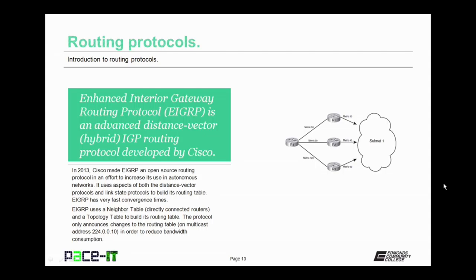As a special mention, Enhanced Interior Gateway Routing Protocol, EIGRP, is an advanced distance vector, or hybrid, IGP routing protocol developed by Cisco. In 2013, Cisco made EIGRP an open-source routing protocol in an effort to increase its use in autonomous networks. It uses aspects of both the distance vector and link state protocols to build its routing table. EIGRP has a very fast convergence time, but it's not as popular as OSPF because OSPF has been open-source longer. EIGRP uses a neighbor table of directly connected routers and a topology table to build its routing table. The protocol only announces changes to the routing table on multicast address 224.0.0.10 in order to reduce bandwidth consumption.